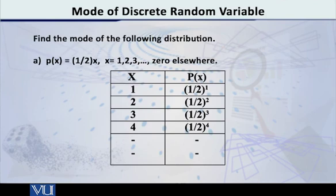So obviously first one, half raised to 1. The second one when X is 2, half raised to 2, half raised to 3, half raised to 4, and so on. Now the mode, as I told you a little while ago, is that value of X that maximizes the PMF. So in this table before us, you tell me which probability is the maximum?